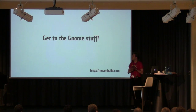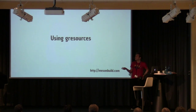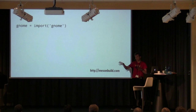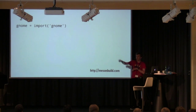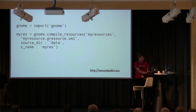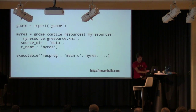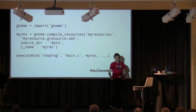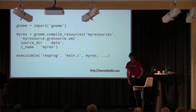Since this is a GNOME conference, let's get to the actual GNOME stuff. Starting with something simple - using GResources. You use the GNOME extension module: there's a core and extension modules for Qt, GNOME, and other things. You call 'compile_resources' with a name, the resource XML file, source directory, and C name. You get back an opaque object representing the source and header file, which you put inside an executable. It handles the fact that main.c needs the generated header, ensuring it's built before the C file is compiled.